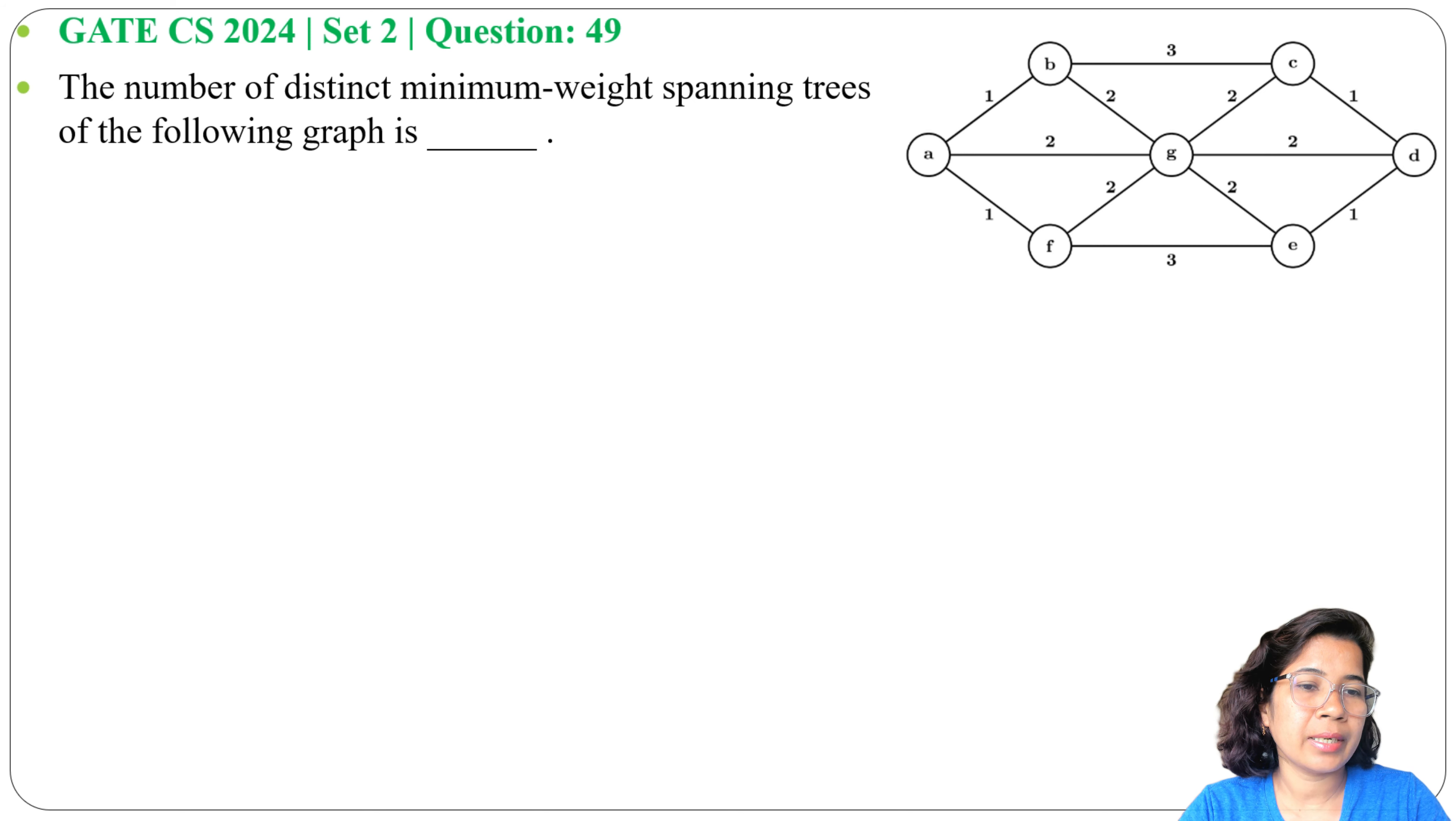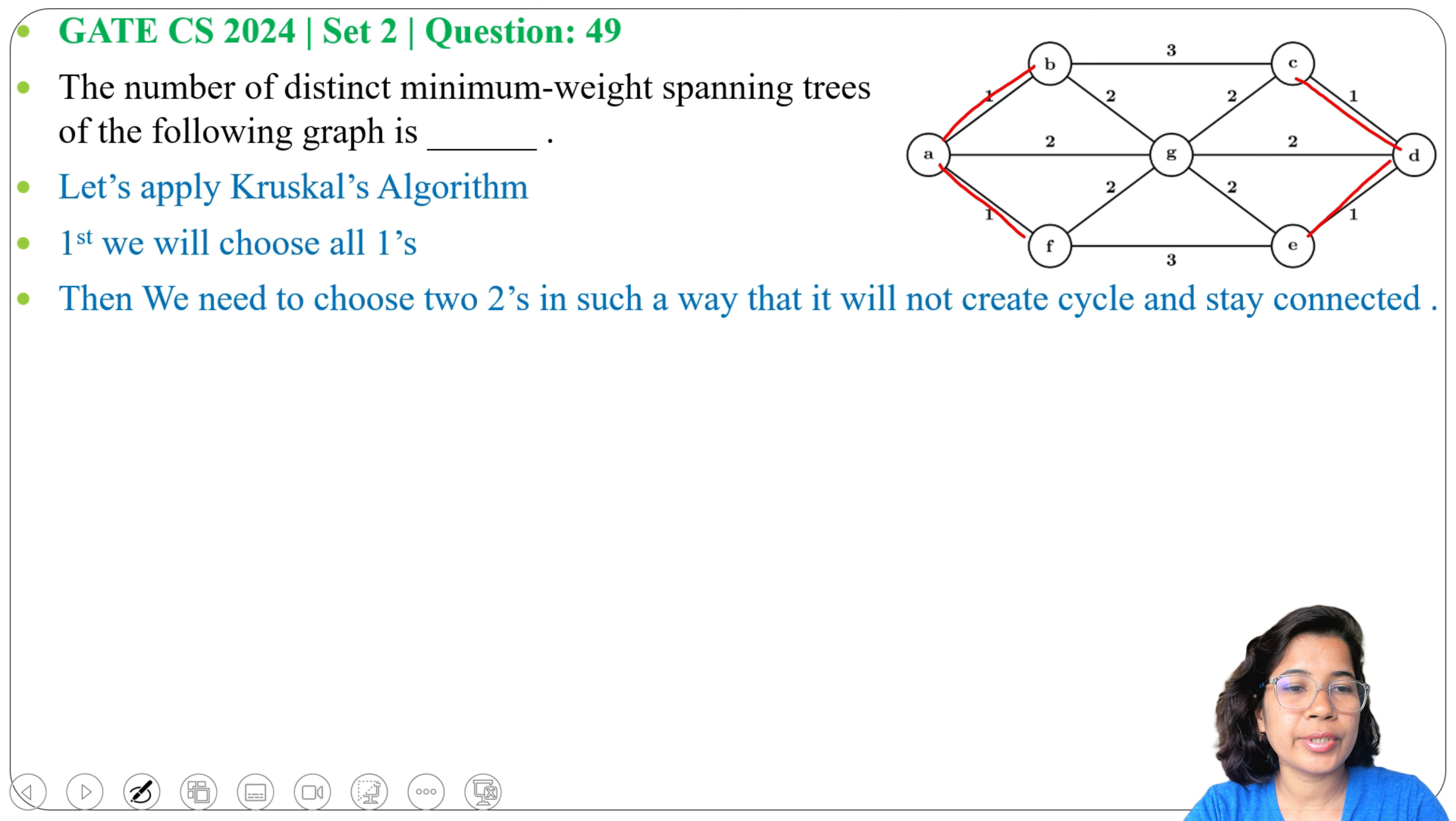Here there are weights having 1, 2, and 3. First I will choose all edges having weight 1: AB, AF, ED, and CD. After choosing weight 1, next we'll choose weight 2.